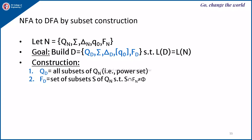Fd is the set of all subsets of the NFA which contain the final state of NFA. That means S such that S intersection Fn is not equal to empty set, where S is a subset of Qn. It means that all those subsets which contain the final state Fn will be the final states in the DFA.